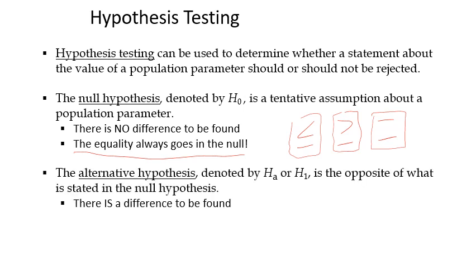Relating to that is the alternative hypothesis, written as H_A or H₁. Sometimes if you've got more than one alternative you'll see H₁, H₂, H₃ for the different hypotheses, but most of the time I'll write it as H_A. The alternative is the opposite of the null — essentially there's a difference to be found. So this is written as greater than, less than, or not equal to. They line up with the null: if H₀ is less than or equal to, H_A is greater than; if H₀ is greater than or equal to, H_A is less than; if H₀ is equal, H_A is not equal.